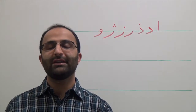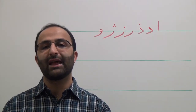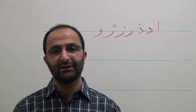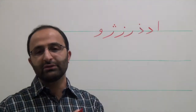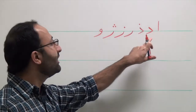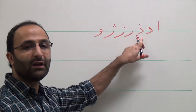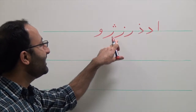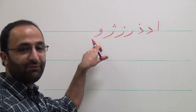Now we will start the lesson on the characters that cannot be connected to a following character. Those characters are Aleph, Dal, Zal, Re, Z, J, and Waw.